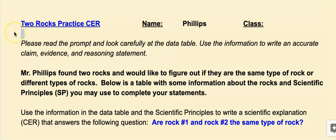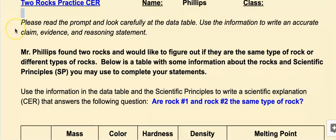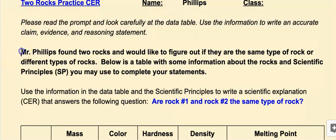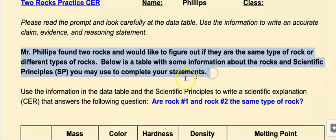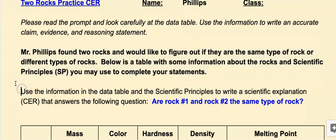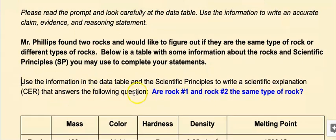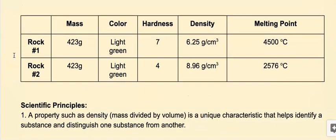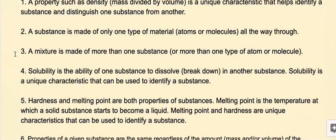When you get a CER, one of the things you need to do is make sure you look at the directions. We have our directions here. Make sure you look at any background information that's given to you, and then you want to make sure that you know what the question is that's being asked of you. The next step is to look at your data and your scientific principles.